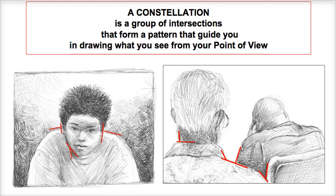We learned about directions in Lesson 1 and intersections in Lesson 2. And here we're learning that a constellation is a group of intersections that form a pattern that guide you in drawing what you see from your point of view, no matter what you're looking at.